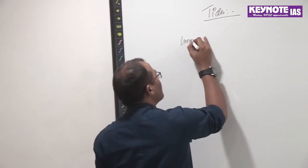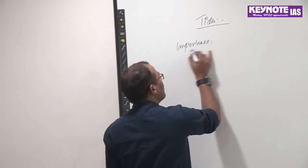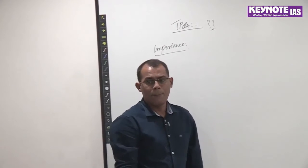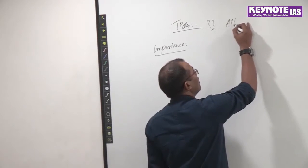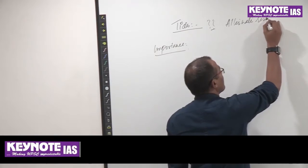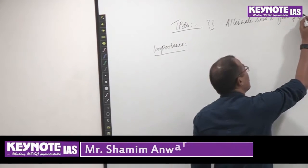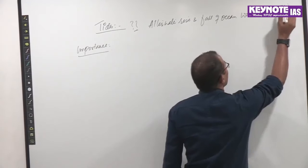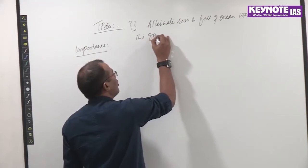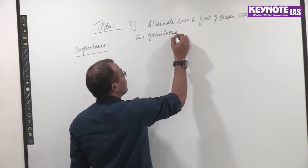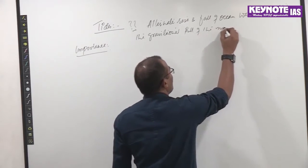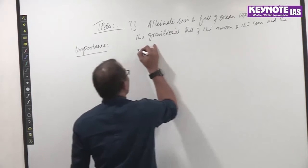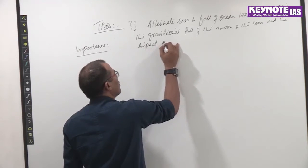What is the importance of tides? Tides are the alternate rise and fall of ocean waters, associated with the gravitational pull of the moon and the sun, and the impact of Earth's rotation.